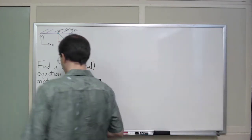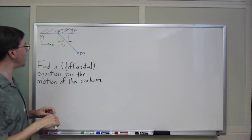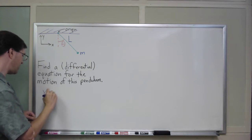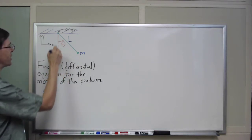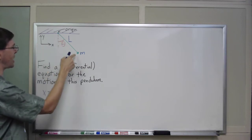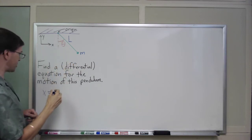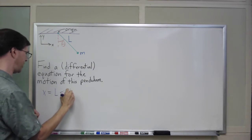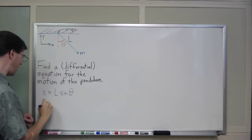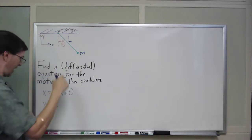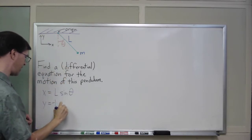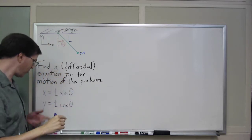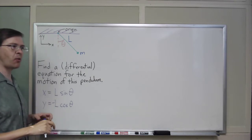I'll write down the position of the mass as a function of time. If I imagine a right triangle, the x-side is opposite theta, so x equals L times sine of theta. And the y position is negative L times cosine of theta, because when theta is zero the mass is maximally downward — maximally negative.